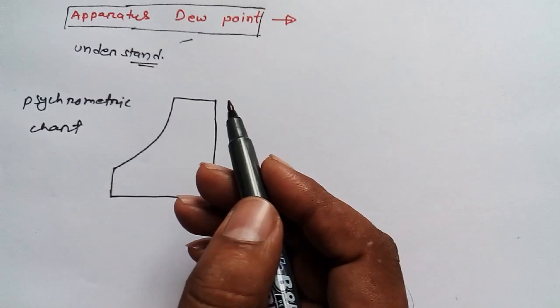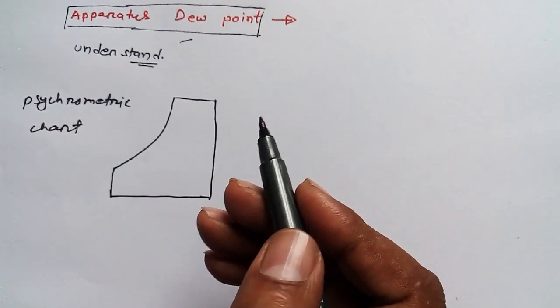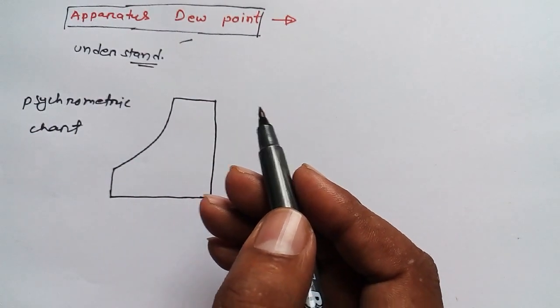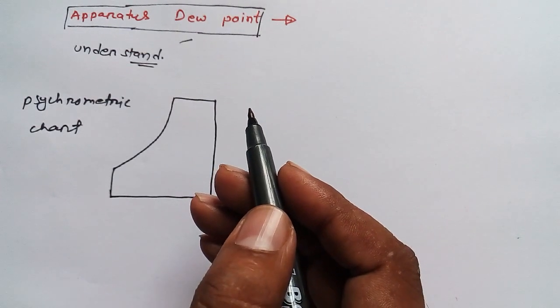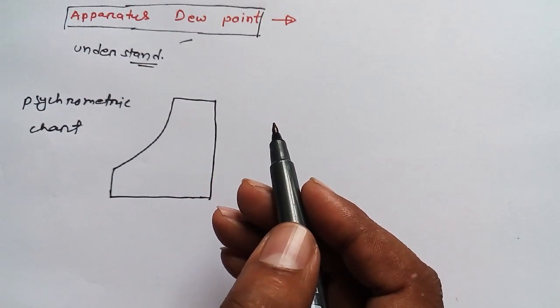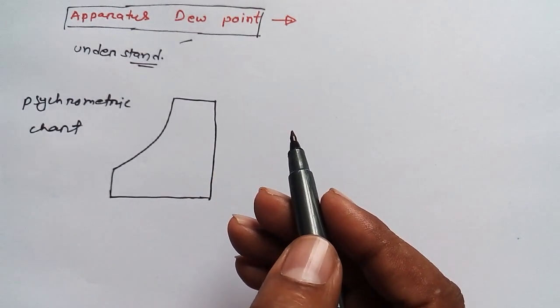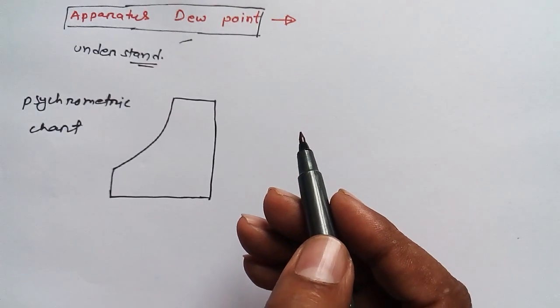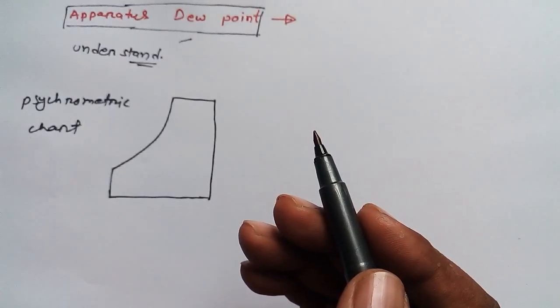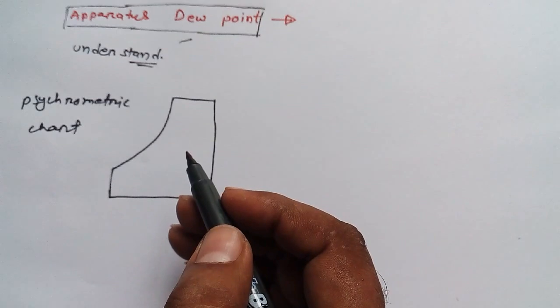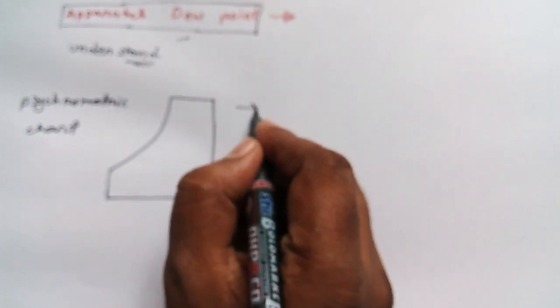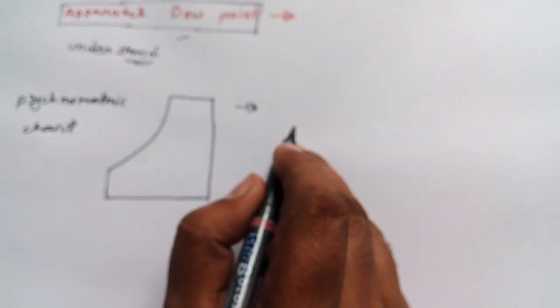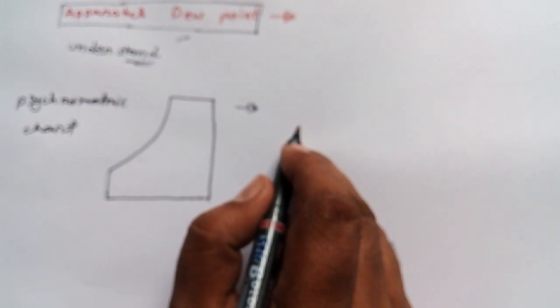So basically what is apparatus dew point? This dew point is a point which we usually identify by using a psychometric chart. If I go according to the definition of the psychometric chart, then you can easily come to know how to define it.